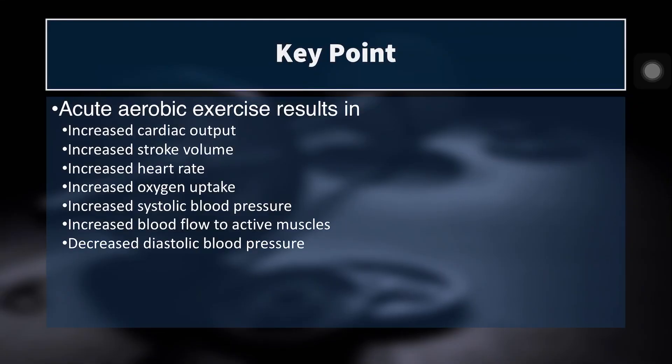To summarize, acute aerobic exercise results in: increased cardiac output enabled by increased stroke volume and heart rate; increased oxygen uptake due to greater cardiac output and oxygen availability; increased systolic blood pressure due to increased stroke volume and harder heart contractions; increased blood flow to active muscles; decreased diastolic blood pressure; and increased ventilation rate. In the next video, we'll be talking about the chronic adaptations to aerobic training programs — not just aerobic exercise, but aerobic training, meaning consistent and continuous, and not responses but adaptations.